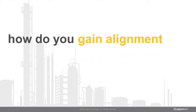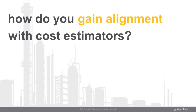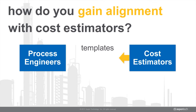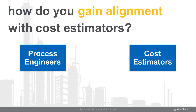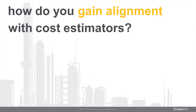So how do you gain alignment with cost estimators? With Activated Economics you can incorporate your company's historical project data and design standards into templates. When it's time to get a more accurate cost estimate, you can pass the automatically created IZP file to the estimator, including the sized equipment list with materials of construction, significantly reducing manual data transfer.